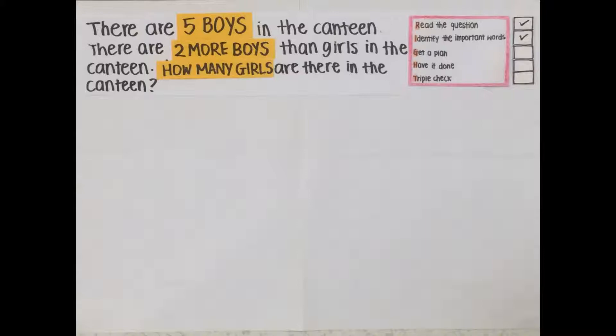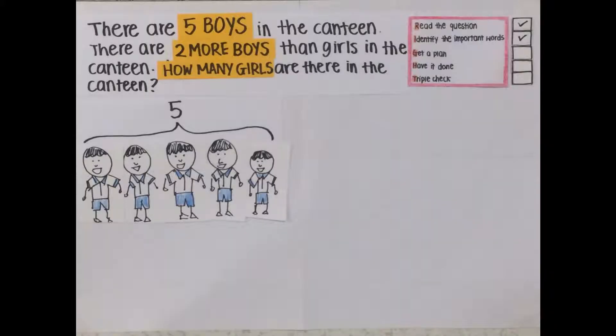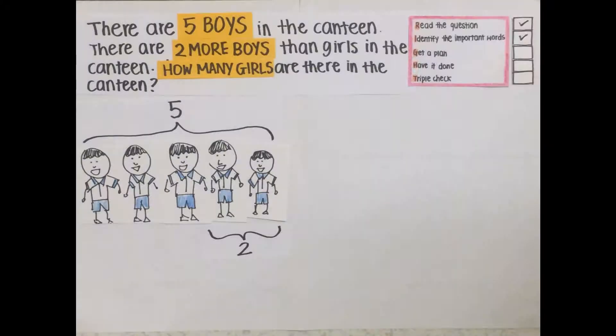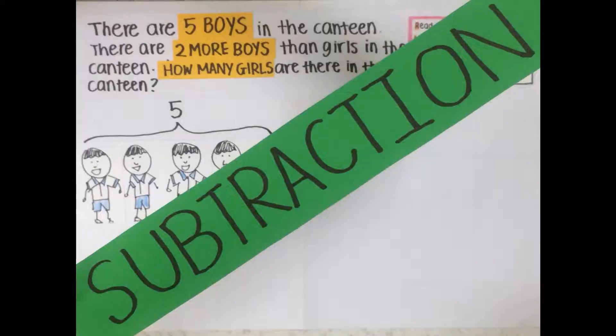Now we get a plan. We first have 5 boys. Then we know that there are 2 more boys than girls. This question asks for the number of girls, so we know that it is a subtraction type of question.